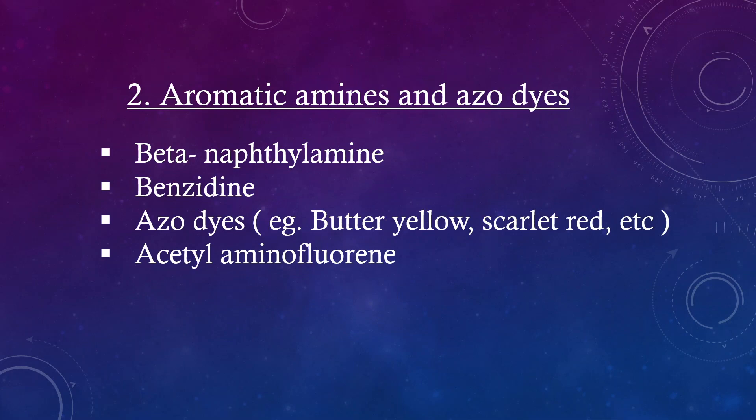Aromatic amines and azodyes: examples include beta-naphthylamine and benzidine. Azodyes include butter yellow and scarlet red. Another example is acetyl-aminofluorene.